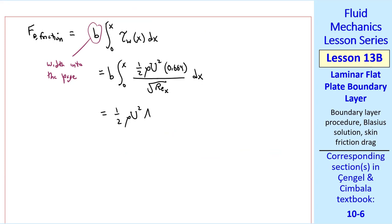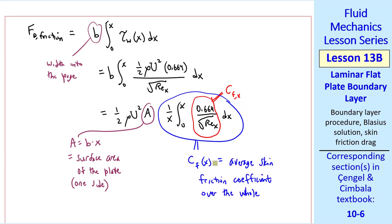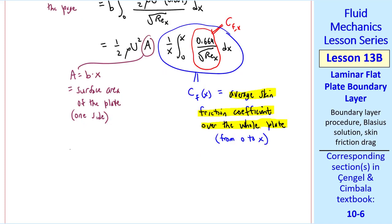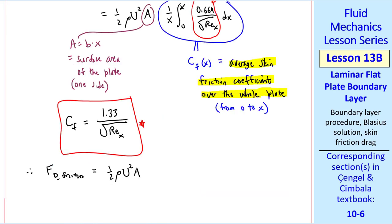We recognize this as Cfx, our local skin friction coefficient. And we'll call this grouping of terms Cf of x without the comma x, which is the average skin friction coefficient over the whole plate from 0 to x. When you do this integral, we end up with Cf is 1.33 over the square root of REx. And our equation for FD friction is then this quantity times Cf. Where FD friction is 1 half rho u squared A times Cf of x, which is the skin friction drag on one side of the plate from 0 to x.